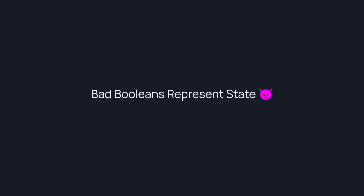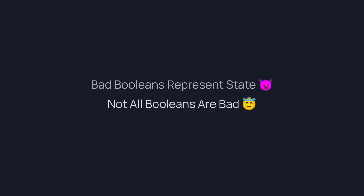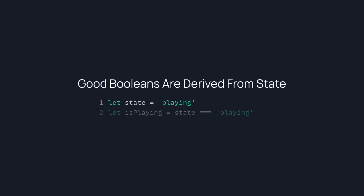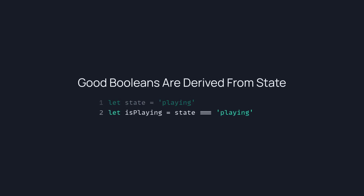Bad booleans represent state. But not all booleans are bad — good booleans are derived from state. So as you can see here, if you have some state 'playing', then you can derive from it 'is playing' if state is equal to 'playing'.